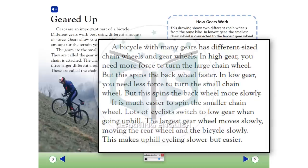Lots of cyclists switch to low gear when going uphill. The largest gear wheel moves slowly, moving the rear wheel and the bicycle slowly. This makes uphill cycling slower, but easier.